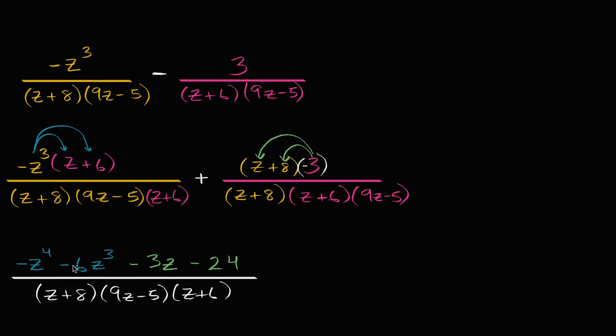Sometimes you'll do one of these types of exercises, and you might have two second degree terms, or two first degree terms, or two constants, or something like that. And then you might want to add or subtract them to simplify it. But here, these all have different degrees, so I can't simplify it any further. And so we are all done.